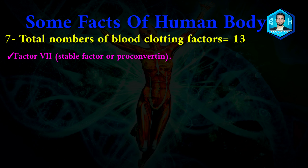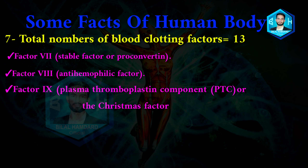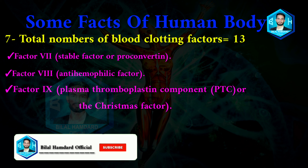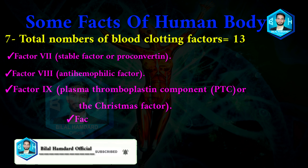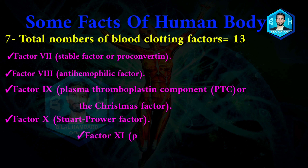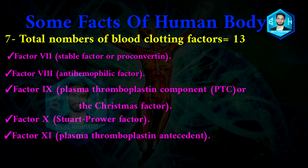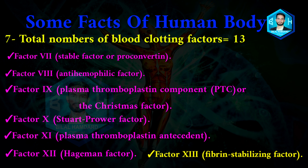Factor seven — stable factor or proaccelerine; factor eight — anti-hemophilic factor; factor nine — plasma thromboplastin component, PTC or Christmas factor; factor ten — Stuart-Prower factor; factor eleven — plasma thromboplastin antecedent; factor twelve — Hageman factor; factor thirteen — fibrin stabilizing factor.